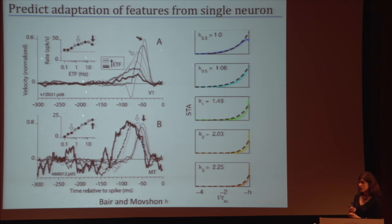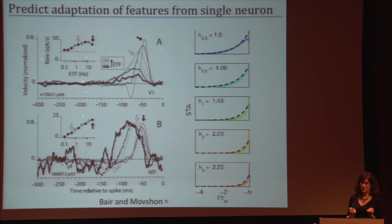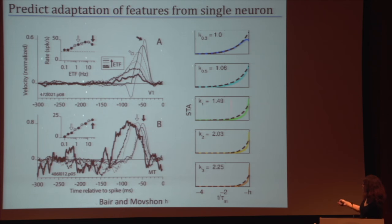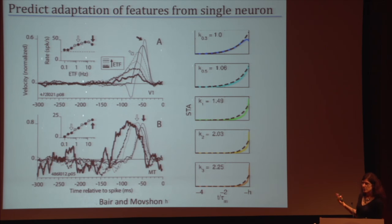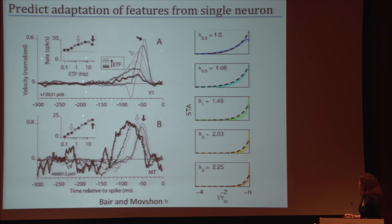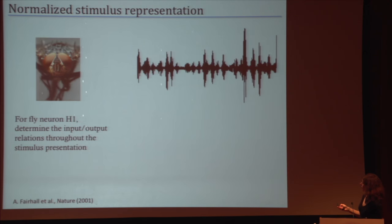This adaptive feature property can be instantiated at the single neuron level rather than requiring a complex circuit property. Even though nothing about the underlying system changes, driving it with different stimuli samples the nonlinearity differently, leading to a different effective timescale of feature representation. Using analytical methods, we can derive what the filtering time constant of a neuron should be as we change input contrast — the property that features are adaptive is a single-neuron computation.